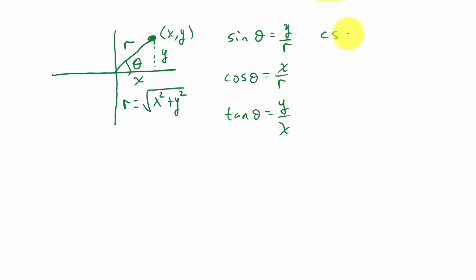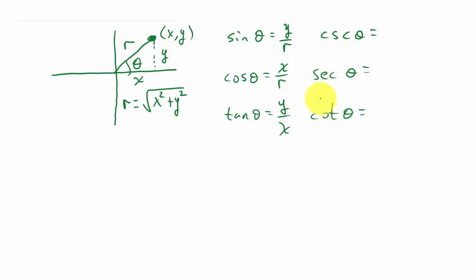And then we have cosecant theta, secant theta, and cotangent theta. You should remember that these are just the reciprocals — cosecant is the reciprocal of sine, secant is the reciprocal of cosine, and cotangent is the reciprocal of tangent. So that's r over y, r over x, and x over y.